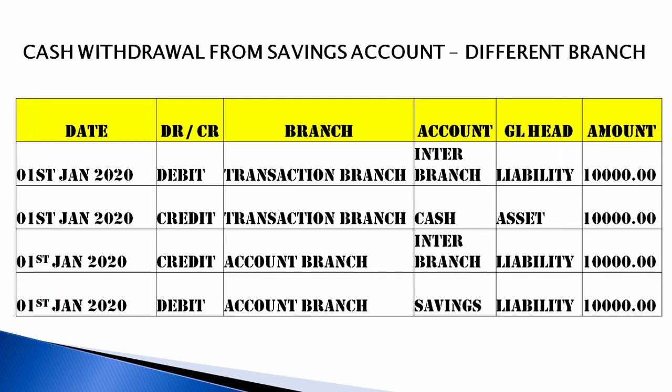For cash withdrawal from a savings account at a different branch, the customer belongs to another branch and is coming to a different branch to perform the transaction. Cash withdrawal means you credit the asset to reduce the balance, and debit the savings bank account to reduce the customer's balance. Inter-branch transactions will occur — one entry for the account-holding branch and one for the transaction branch, with one inter-branch account debited and the other credited.